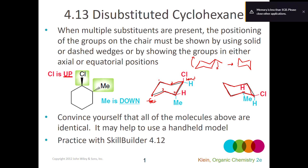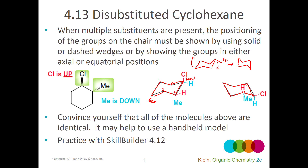Whenever you do that, any group that is in an equatorial position — equatorial is similar to the word equator, meaning around the middle — so equatorial groups are around the middle of the ring, pointing out mostly and slightly up or down. The equatorial groups will become axial groups when you flip. The group still continues to point in the same direction, whether straight down or down and slightly out at an angle, depending on how the ring bonds are rotated.